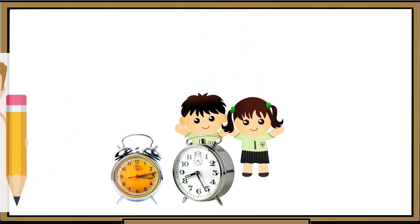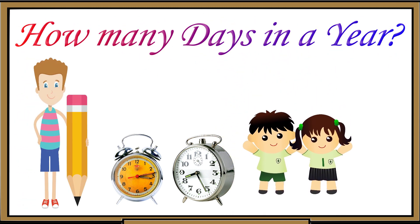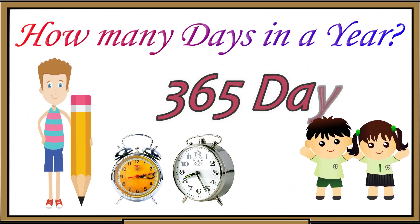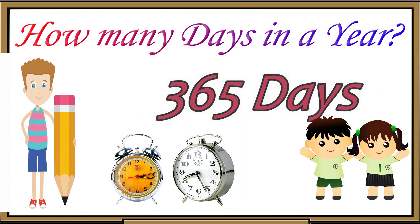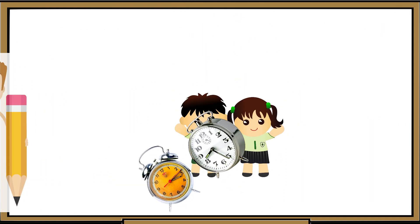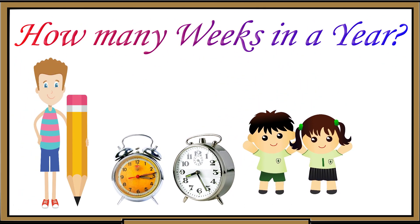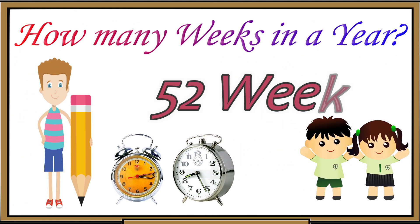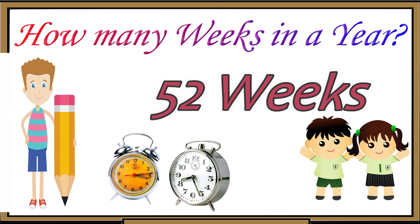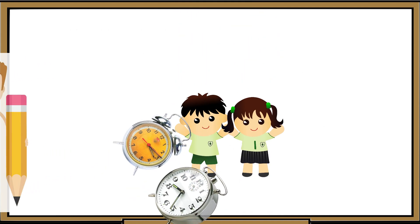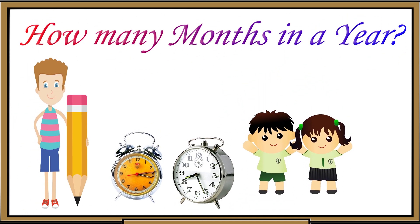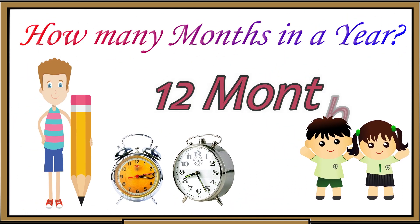How many days in a year? 365 days. How many weeks in a year? 52 weeks. How many months in a year? 12 months.